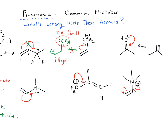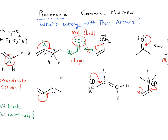Another example: if we follow that arrow, we'd get oxygen with a single lone pair and a positive charge — but again, five-coordinate carbon, which breaks the octet rule, so it's not legal. Similarly, nitrogen with a lone pair and two bonds would give 10 electrons, which is also illegal.